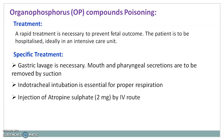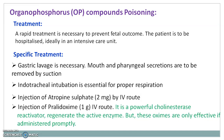Injection of atropine sulphate at 2 mg concentration by intravenous route is given. Atropine sulphate acts as an antagonist of organophosphorus compound. Injection of pralidoxime at 1 g concentration can also be given by intravenous route. Pralidoxime is a powerful cholinesterase reactivator which regenerates the active enzyme, but these oximes are only effective if administered promptly.